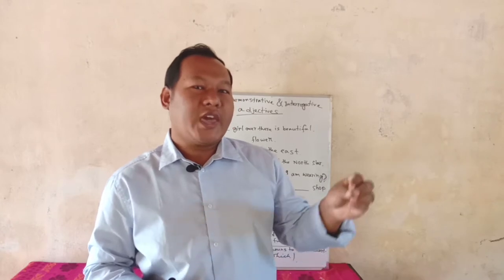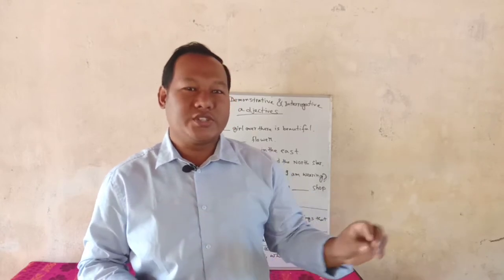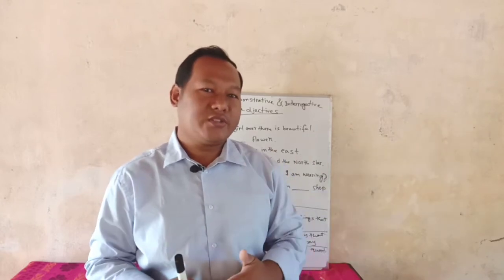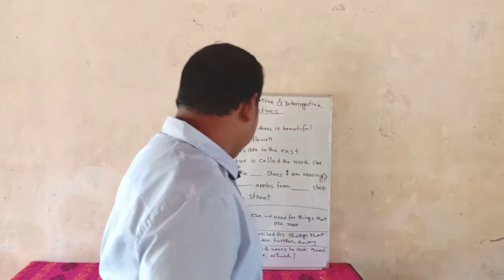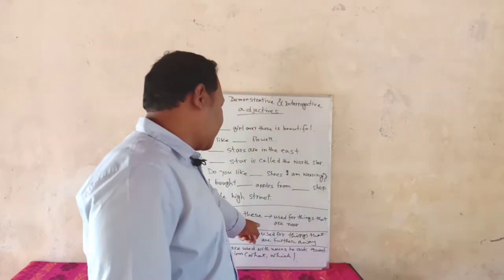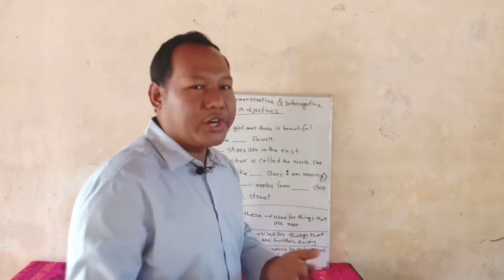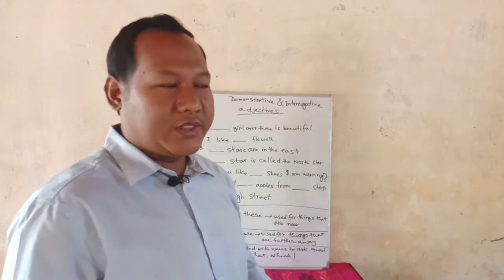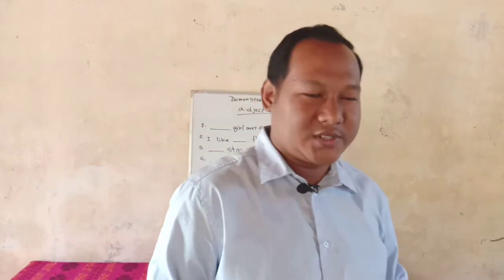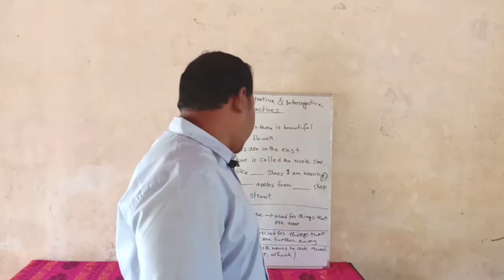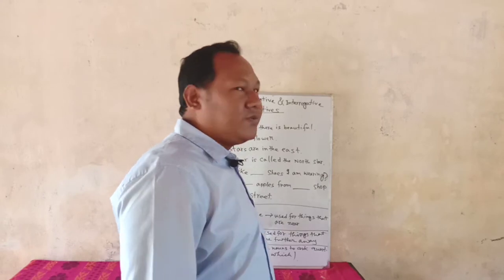We use 'this' and 'these' to show the nearest things. Here I have written: this and these are used for things that are near — very much near to us, that we can touch if we wish to touch them. So to show this kind of thing, we use 'this' and 'these'.